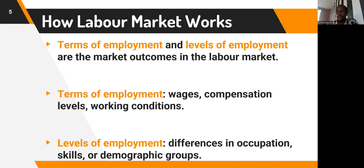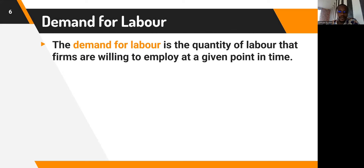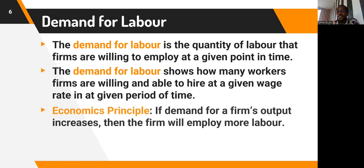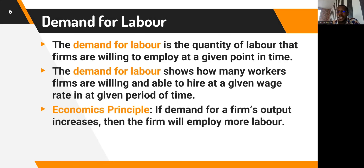For the levels of employment, we look at differences in occupation — whether a worker wants to be a teacher, a doctor, or a lecturer — and also differences in skills or demographic groups. The demand for labor is the quantity of labor that firms are willing to employ at a given point in time. If the demand for a firm's output increases, the firm will employ more labor to produce and meet that demand.